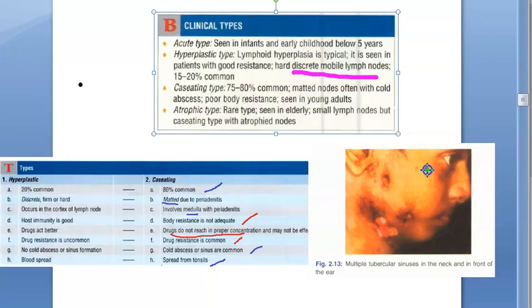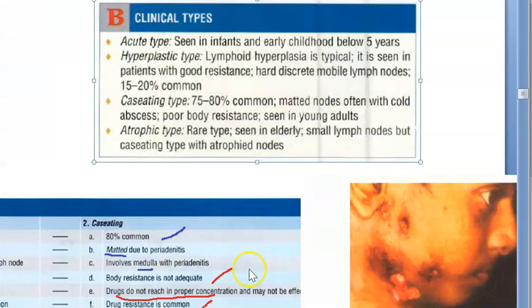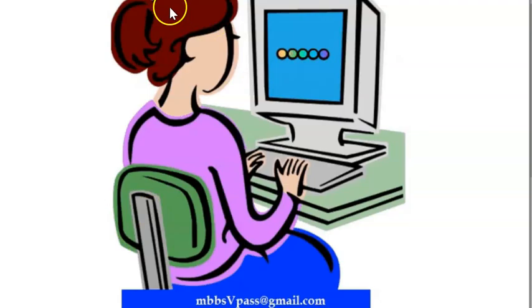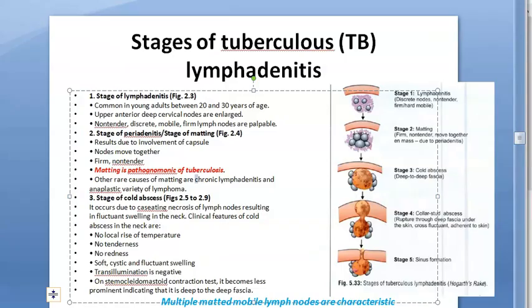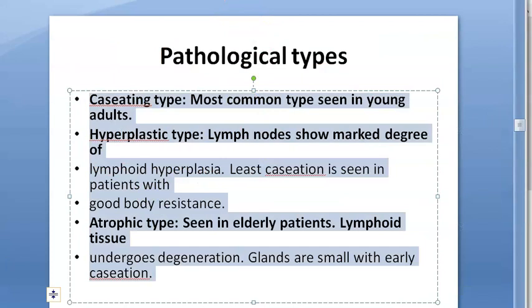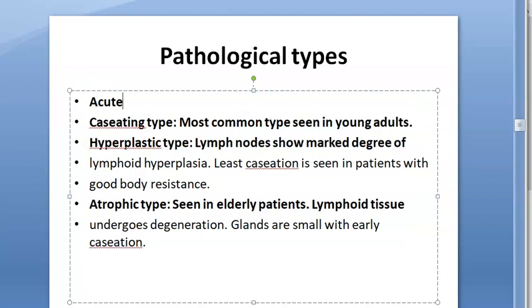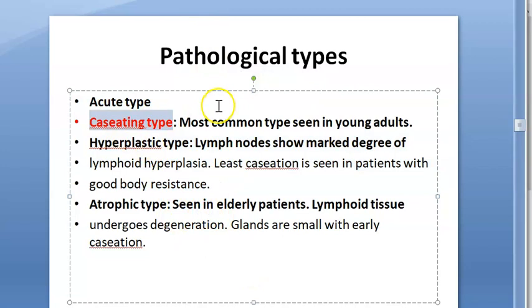Atrophic type is seen in elderly patients, where you will see small lymph nodes with caseating changes and atrophied nodes. These are the clinical types of tubercular lymphadenitis — you can also call them pathological types. Caseating is bad because it indicates the person has low resistance and is unable to fight the infection, while hyperplastic indicates good body resistance.